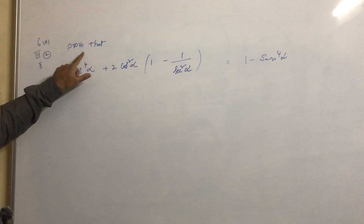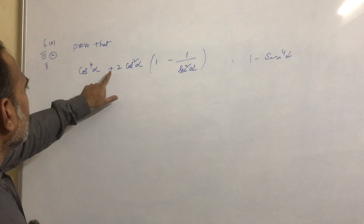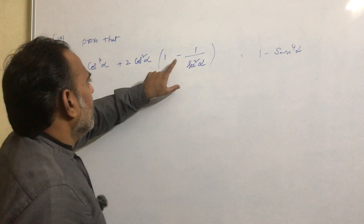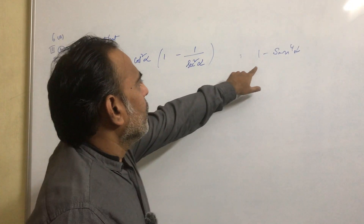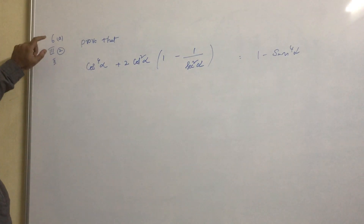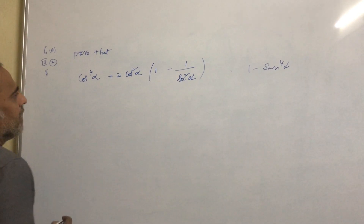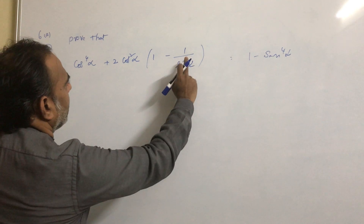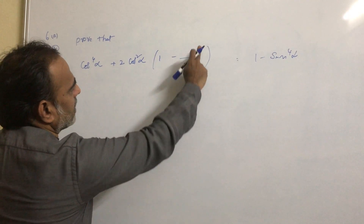In this video, we will prove that cos⁴α + 2·cos α · (1 - 1/sec²α) = 1 - sin⁴α, from exercise 6A, question 3.2.2. Looking at this equation, 1/sec²α can be written as cos²α.